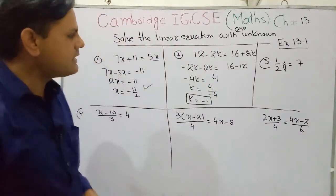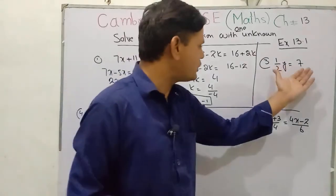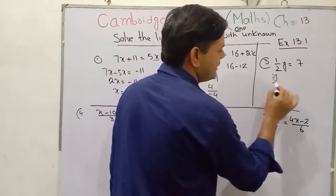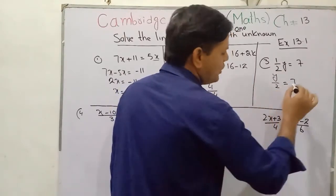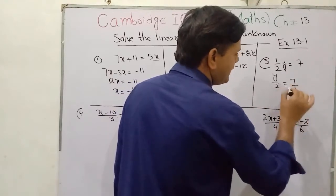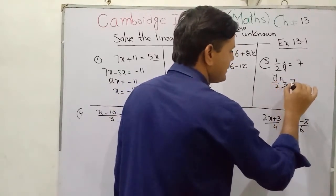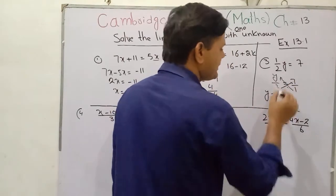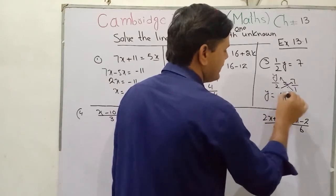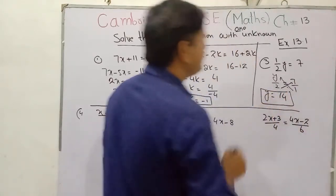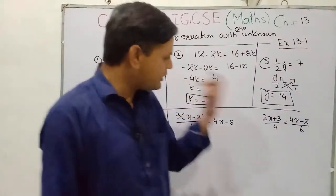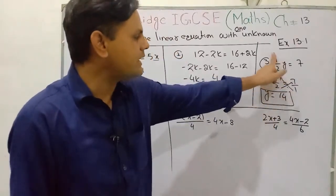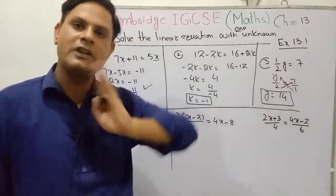The third question has an equation with a fraction: y divided by 2 is equal to 7. Here you use cross multiplication — you multiply this number by this and this number by this. So 1 multiply y gives y, and 2 multiply 7 gives 14. So y equals 14. This is the solution of this equation. You can check whether this is the exact solution by substituting this value back in; if the equality holds, then the solution is exact.